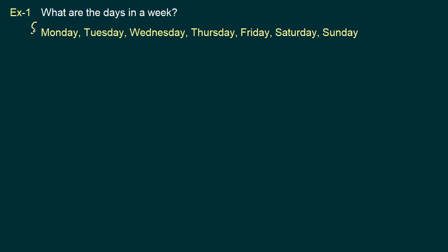We put a starting curly bracket to mark the beginning of our set, and a closing curly bracket to mark the end. Each of these items or objects that make up our set we call elements, and we separate them by comma. We represent the entire set by an uppercase letter. Because these are days in a week, let's represent them by uppercase letter D. So uppercase D represents the set of days in a week, and each one of the days is an element that belongs to our set.